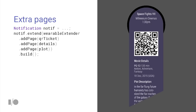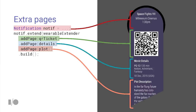Extra pages can be heterogeneous — you can mix and match them to get exactly what you want. This lets you make rich notifications like one for a user's ticket to see Space Fights 7, with three extra pages containing a QR ticket, movie details, and a plot synopsis. All those pages are stacked vertically in the order you add them, allowing you to use extra pages as building blocks to construct the expanded notification exactly as you want — creating an engaging Wear experience without having to make an app.